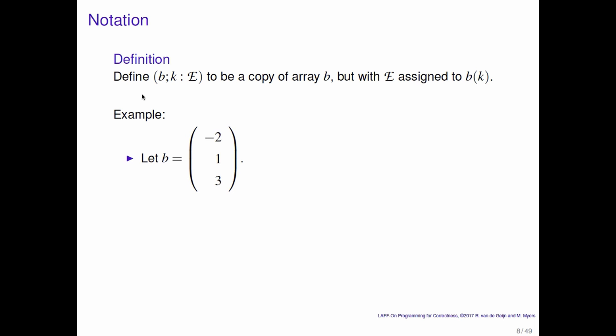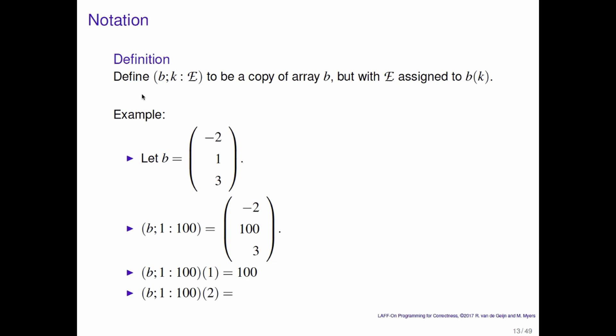Here's an example. We have array b, which we assume is indexed starting with 0, with contents minus 2, 1, and 3. b semicolon 1 colon 100 — written b[1,100] — is then a copy of b but with the element indexed by 1 replaced by the value 100. If we then take that new array and ask what is in the element indexed by 1, we get back 100. If we ask what is in the element indexed by 2, we get the value 3.